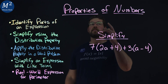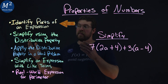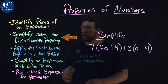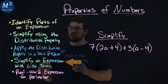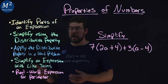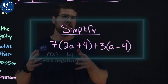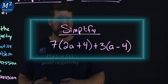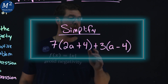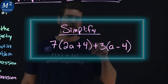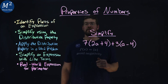In this video, we learned about the properties of numbers. We first identified parts of an expression. Then we simplified using the distributive property. We applied the distributive property in a real-world problem. We simplified an expression with like terms. And then we found an expression for the perimeter in another real-world problem. Now I leave you with this bonus problem: Can you simplify 7 times (2a plus 4) plus 3 times (a minus 4)? Put your answer in the comments below. I hope you learned something here about the properties of numbers.